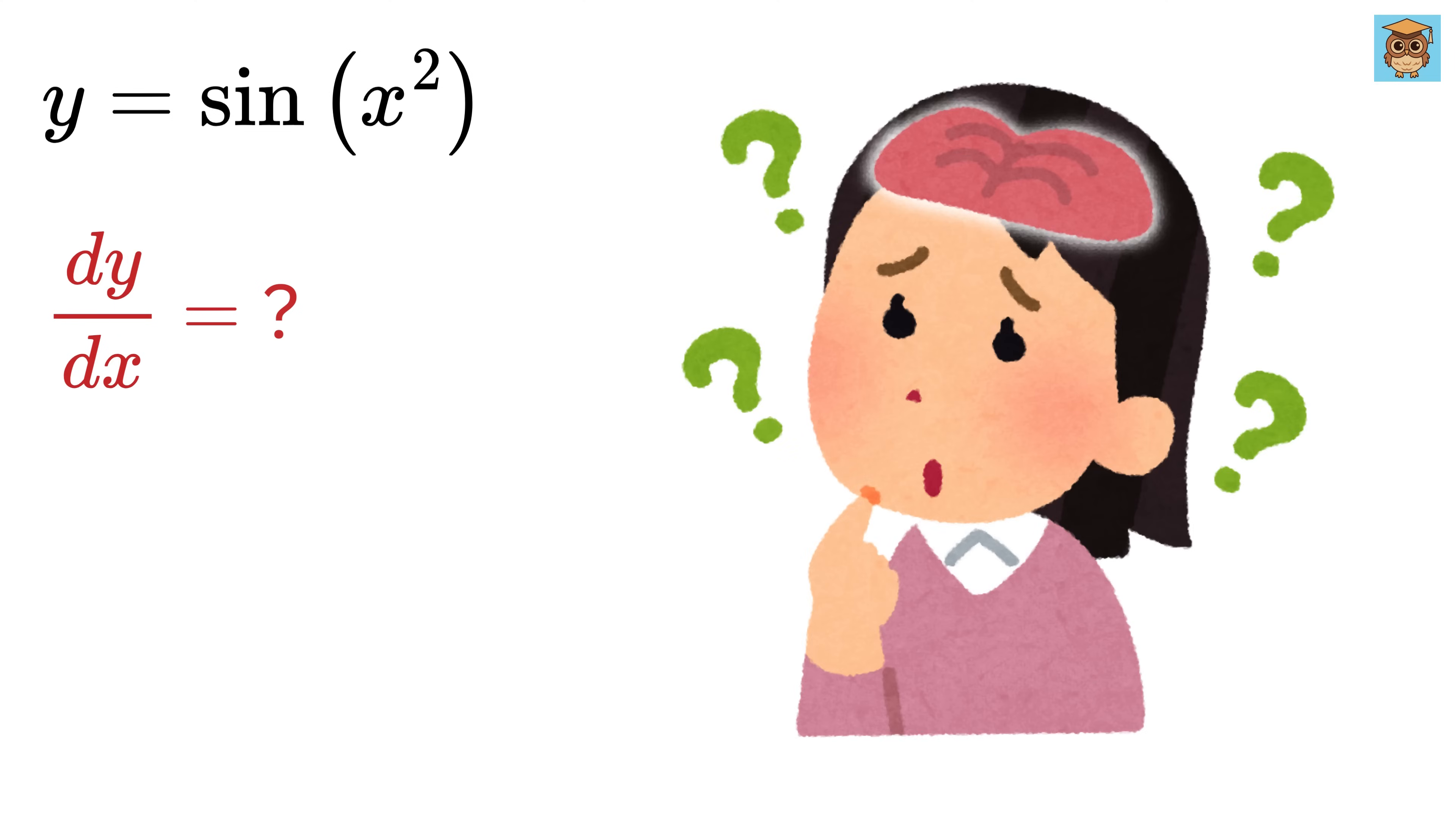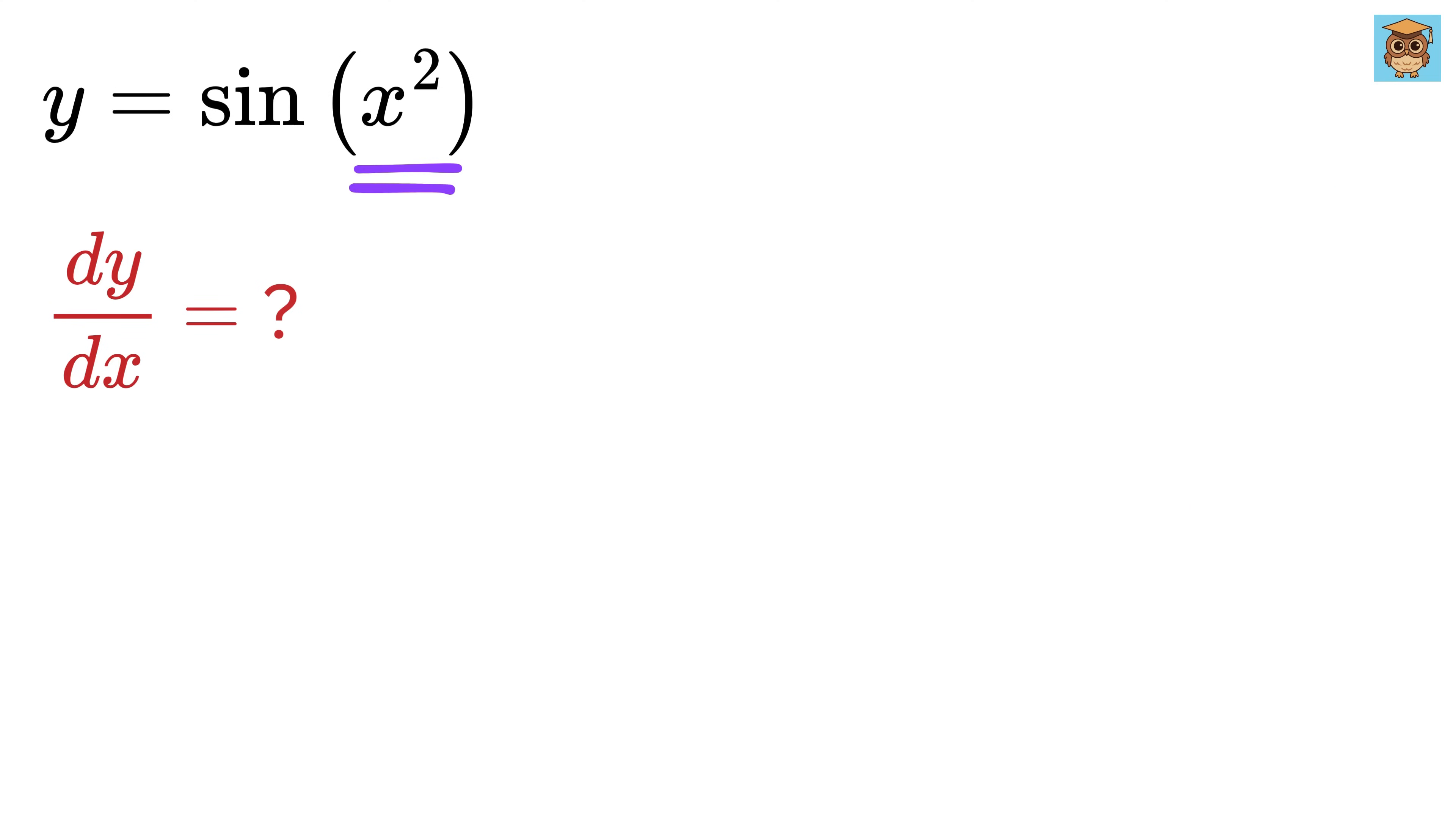Let's take one last example where y equals sine of x square, and we want to find the value of dy by dx. At first glance, this might seem a bit tricky because the sine function isn't applied directly to x but to x square. That's where the chain rule again becomes really helpful. Just like before, we'll simplify the function by creating a middle variable to break it into an inner and an outer function. Let's define the inner function u as x squared. That means the outer function becomes y equals sine of u.